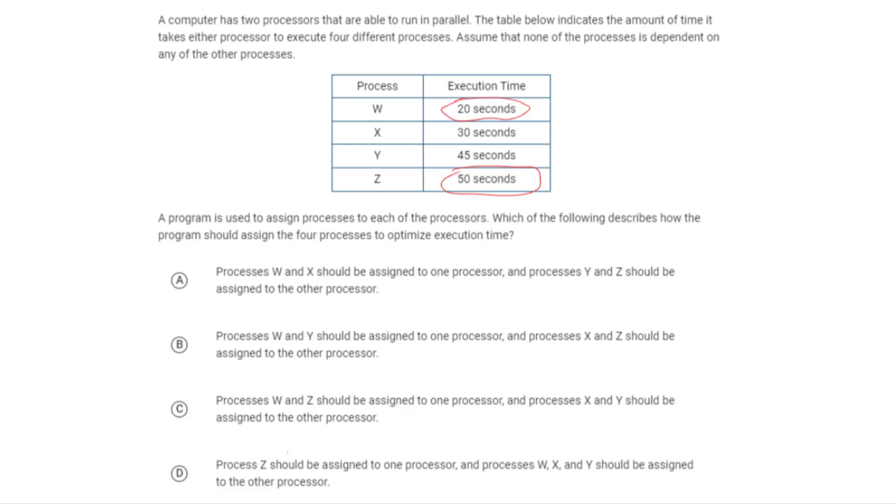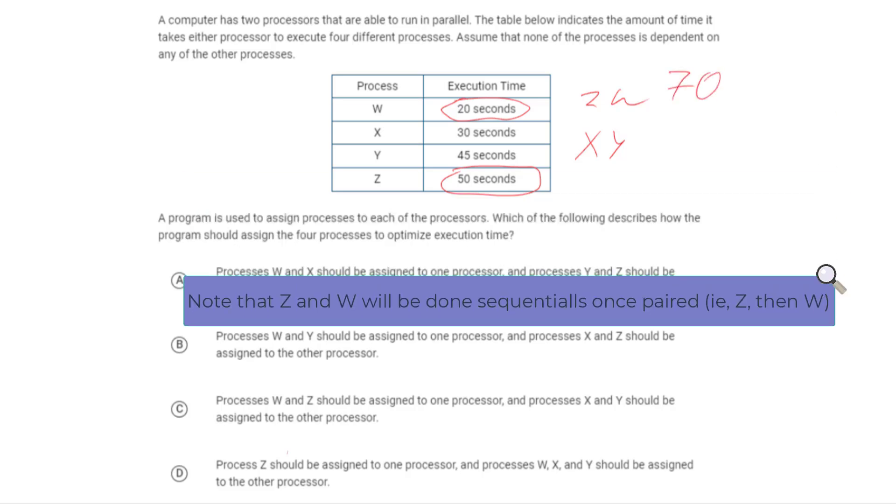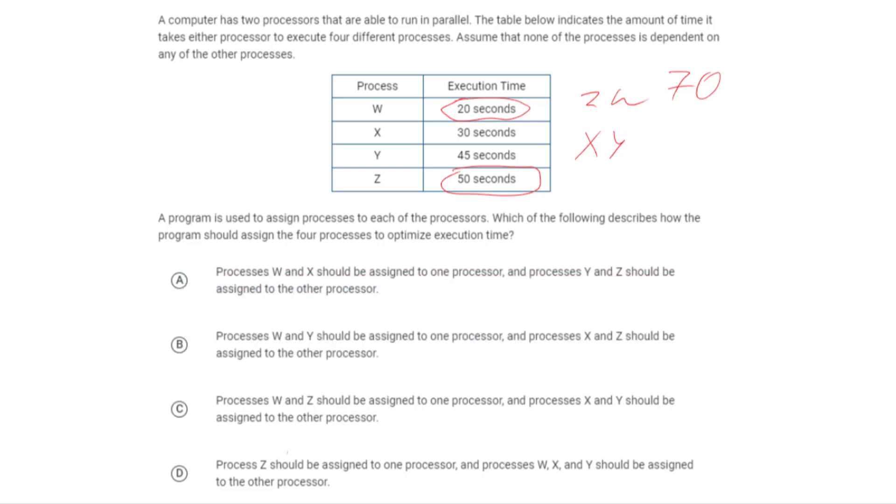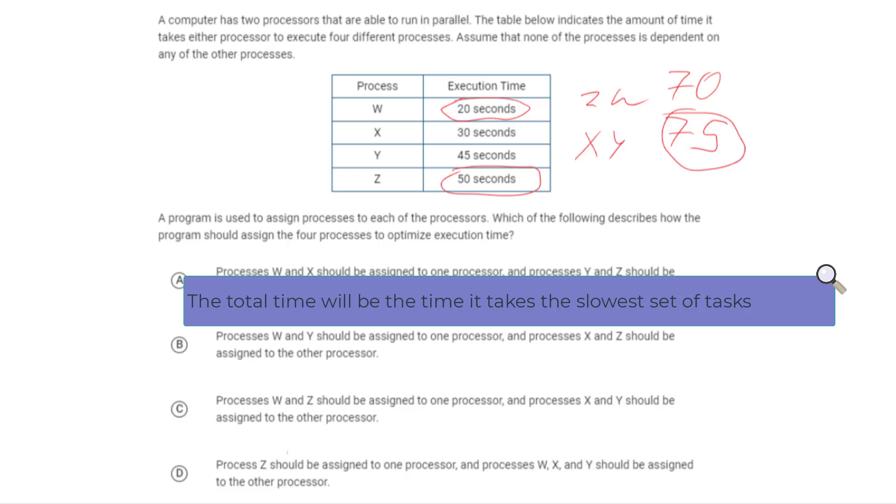Here, you will have Z and W. So if you do Z and W and X and Y, Z and W will take 50 seconds and then 20 seconds. So that's a sequential step in the parallelized portion. And then X and Y, you'll do maybe X and then Y, so that'll take 75 seconds. So the amount of time it'll take overall is going to be 75 here. You can compare that to some of the other pairings.